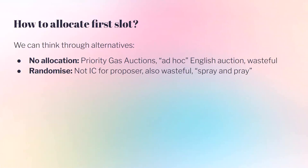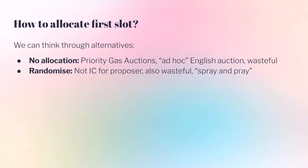Another approach: the block proposer randomizes transaction order. But that's not incentive compatible — as a block producer, you want to induce people to pay you more, and a decreasing price ordering does that better. Even if it were incentive compatible, it would be wasteful. If users know the proposer is randomizing, their incentive is to spam the proposer with many transactions — a 'spray and pray' strategy — trying the arbitrage a million times hoping one lands first. This is super wasteful both in terms of bandwidth and transactions included.